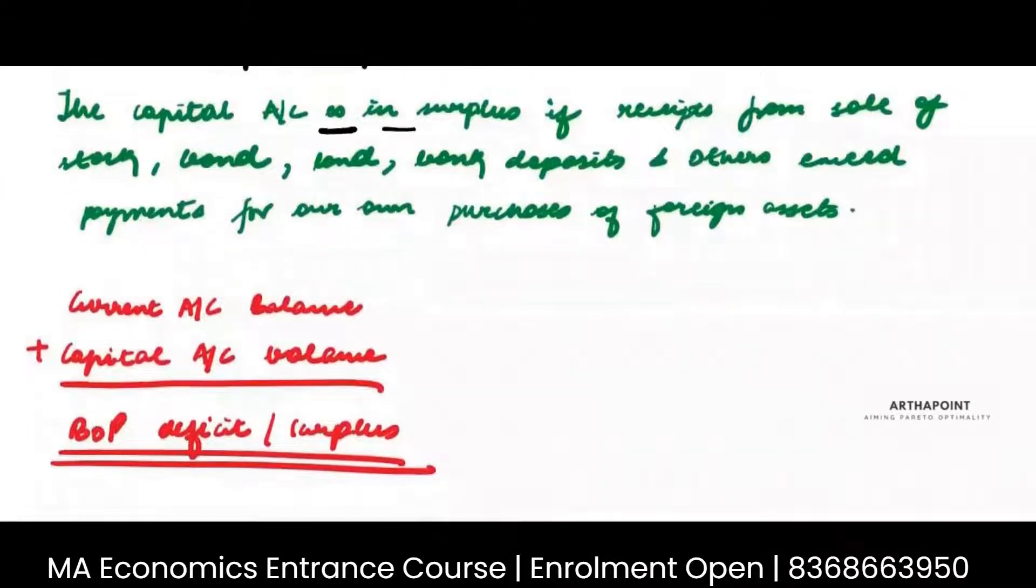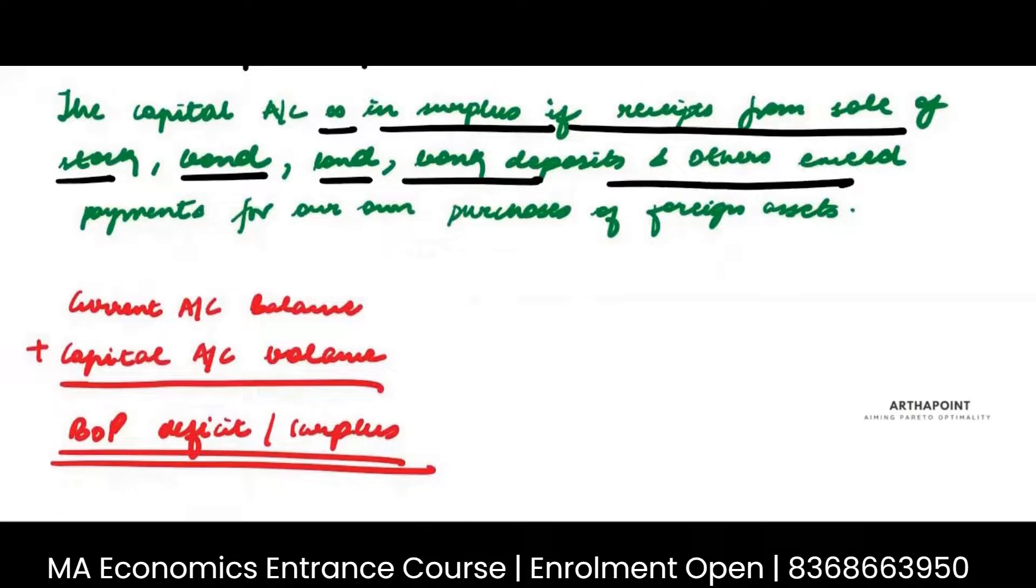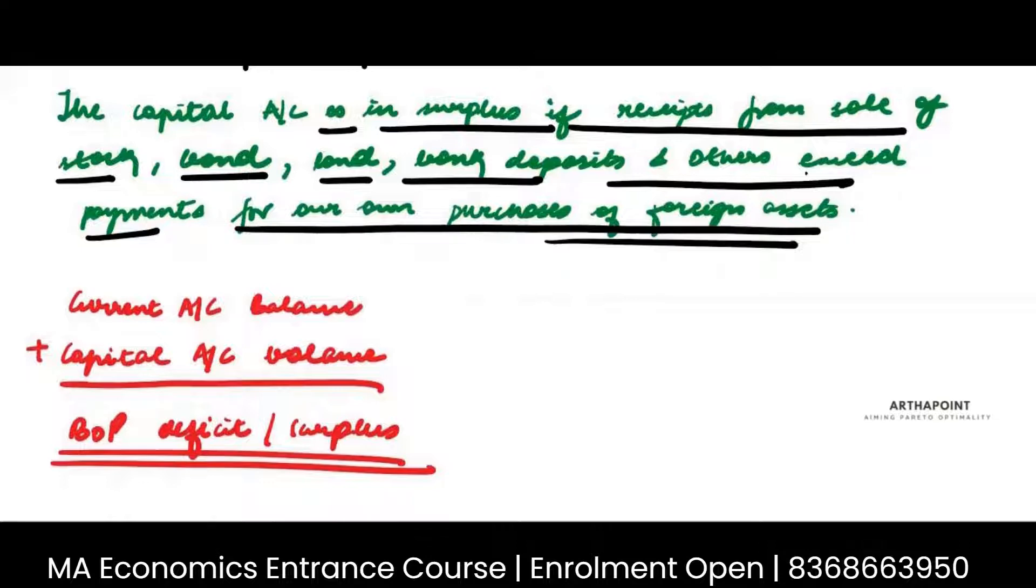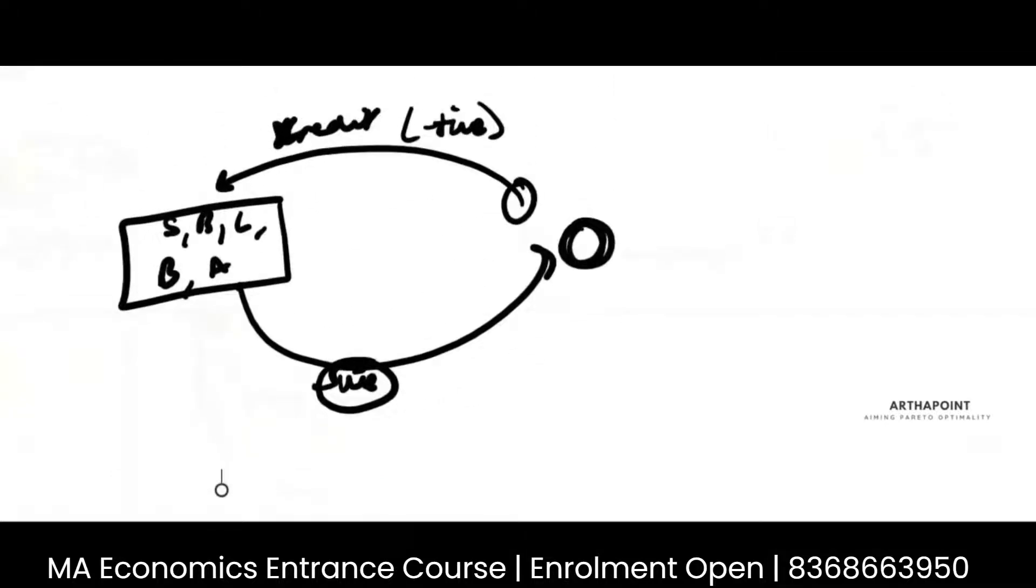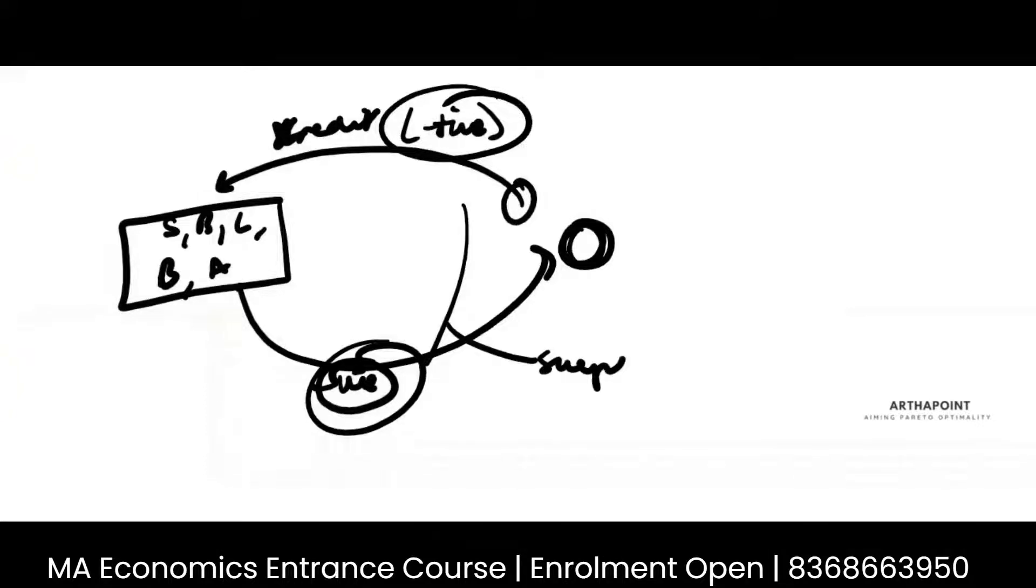The capital account is in surplus if receipts from sale of stock, bond, land, money deposit and others exceed payment for our own purchases of the foreign assets. So if this positive is more than negative, then it is a surplus. Otherwise, it is a deficit.